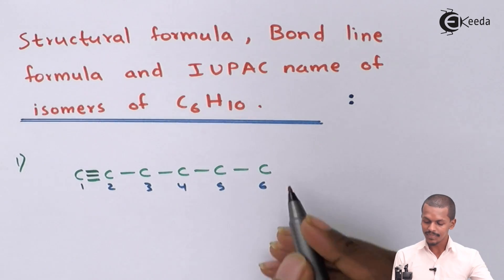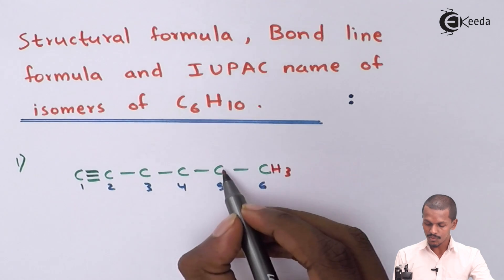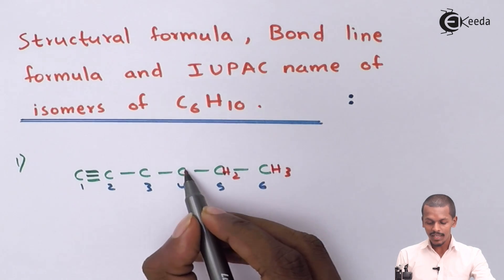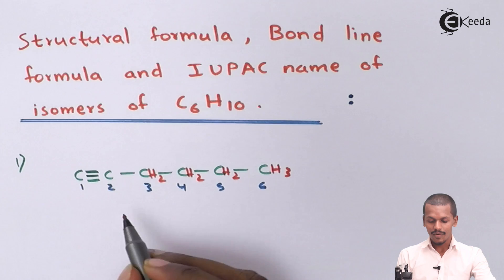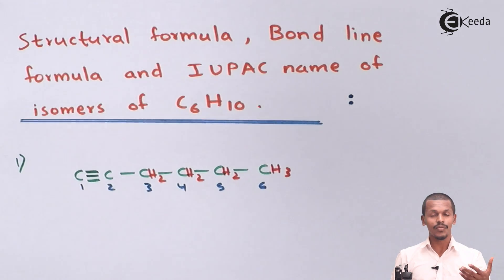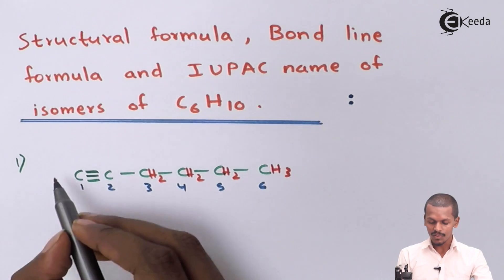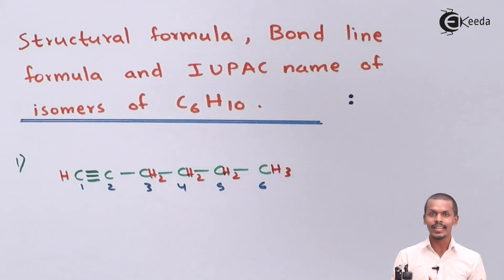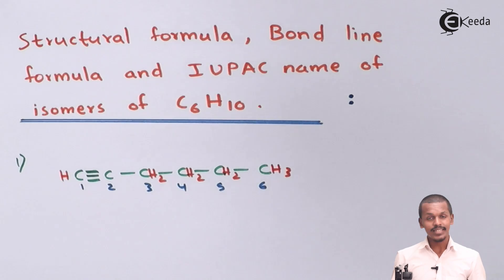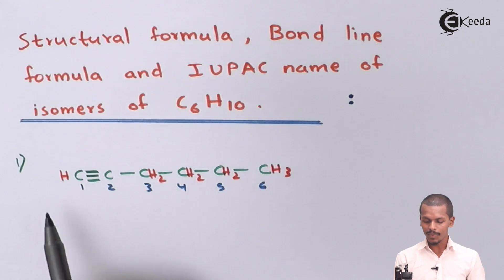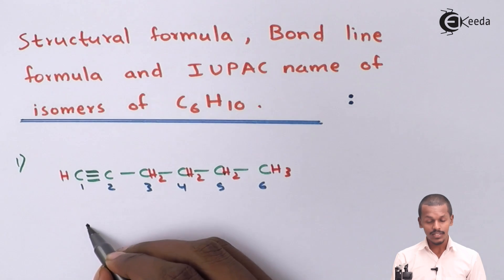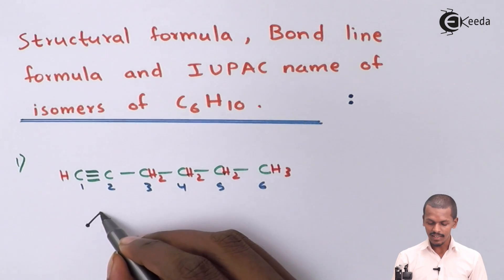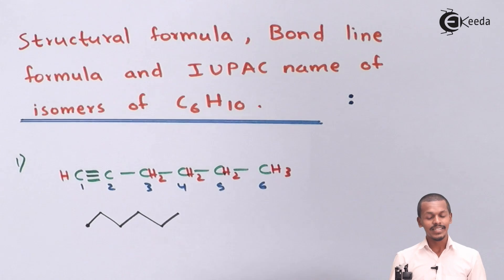We can write: carbon 1 has no hydrogen (triple bond), carbon 2 also has no hydrogen, then CH2, CH2, CH2, and CH3. This structure can be represented in a zigzag bond line formula. It consists of 6 carbon atoms numbered 1 through 6 in a straight chain.